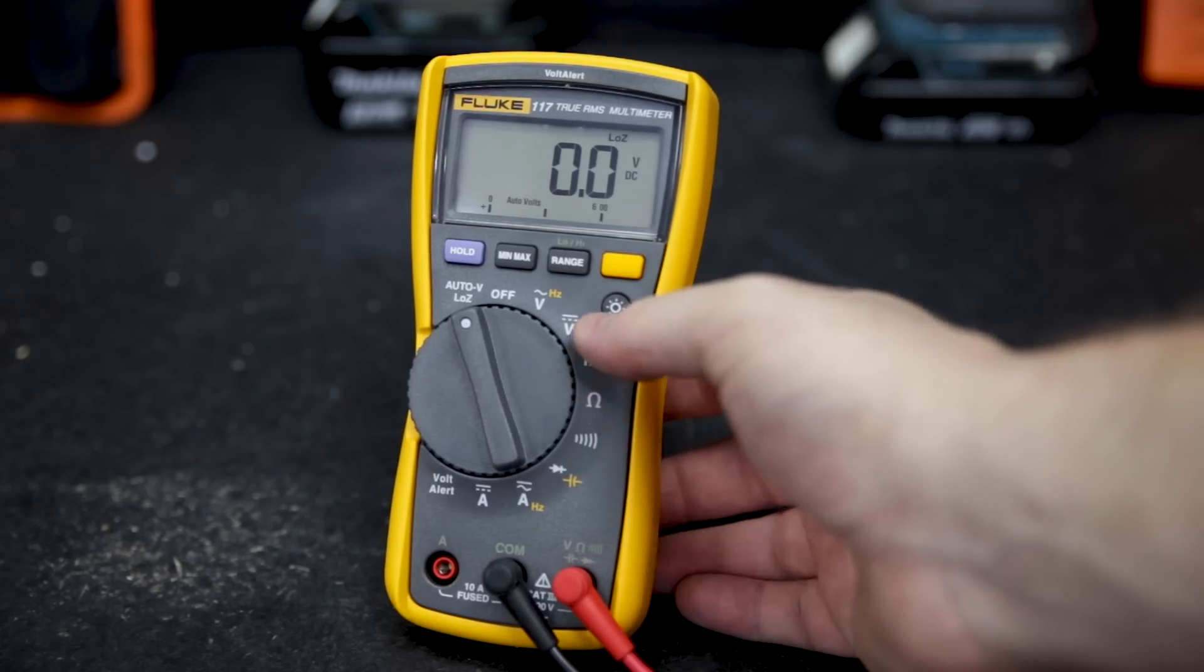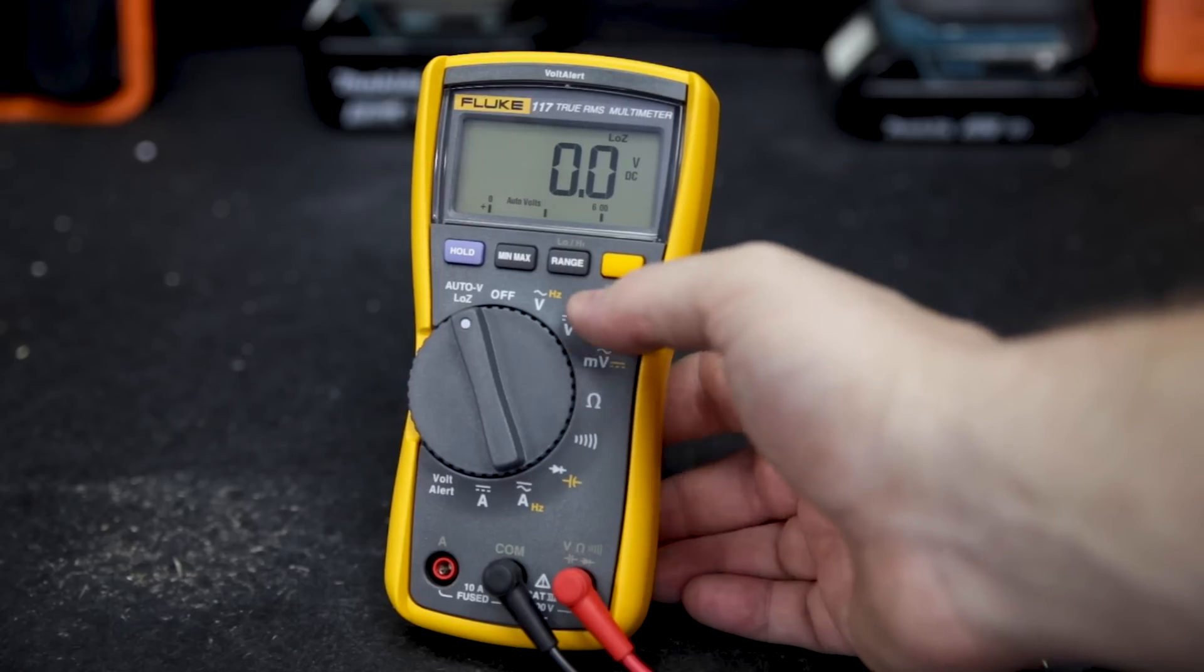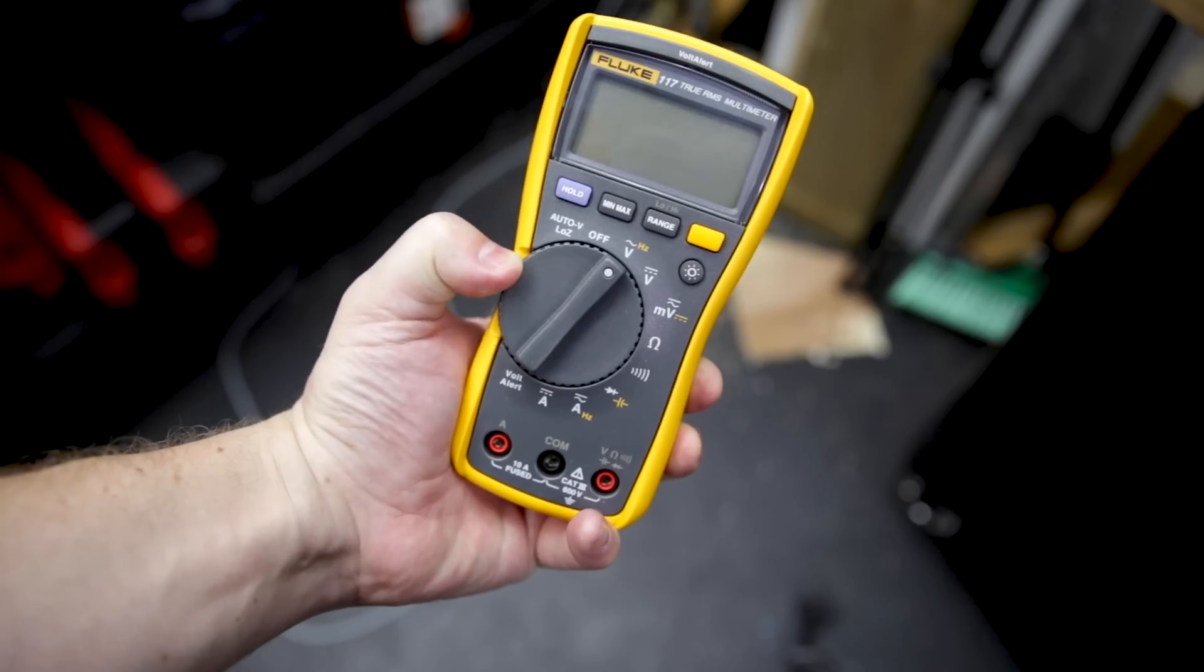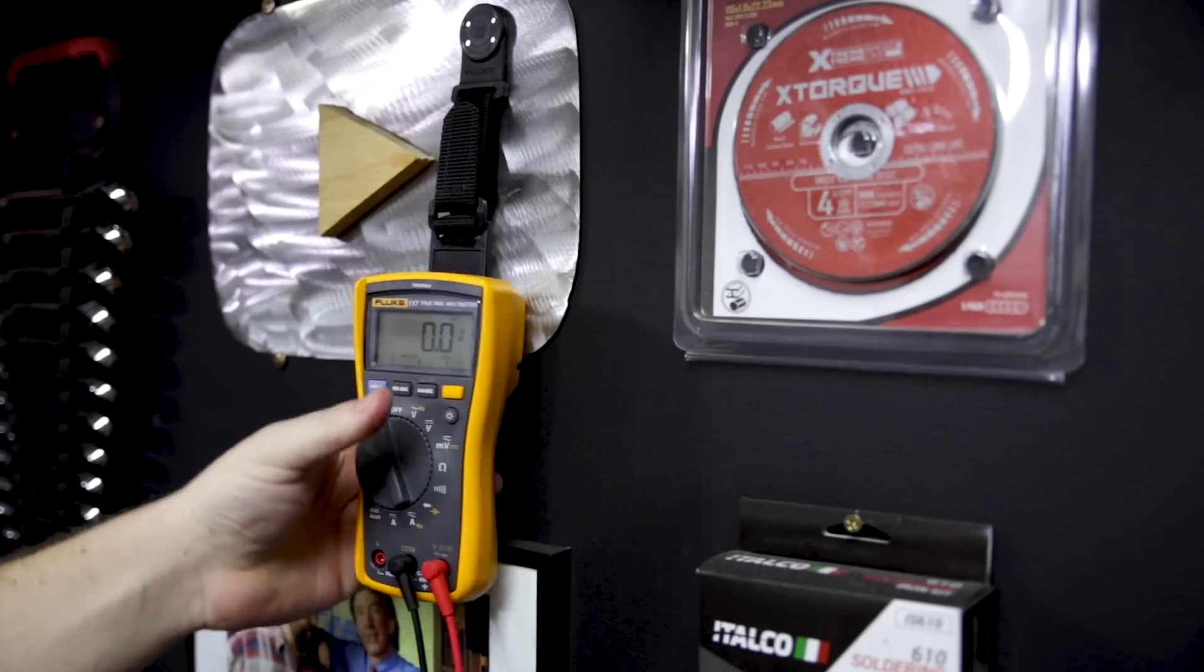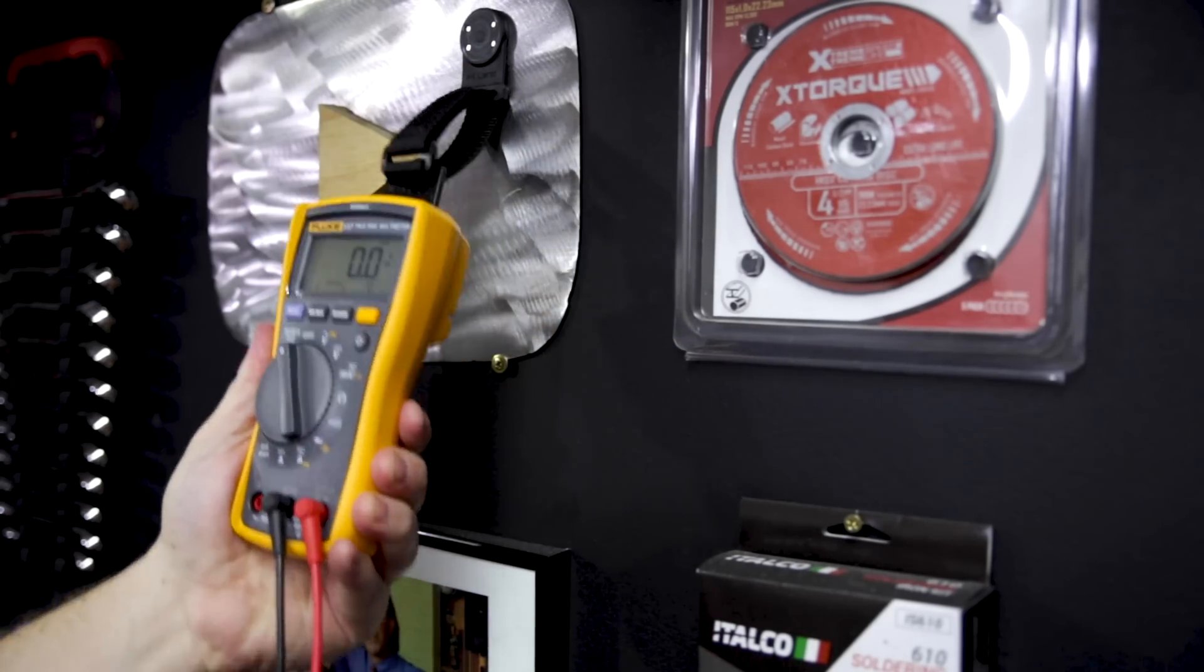It's got a 6000 count digital display, it's backlit for ease of use especially in dark spaces. It's got a really nice comfortable design for one-handed operation and if you want to go completely hands-free a great optional extra is Fluke's tool pack which is a magnetic hanger.